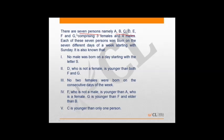There are seven people, namely A to G, comprising three females and four males. I'm going to denote female genders by elliptical or circular notation and male genders by rectangular or square notation, so I don't have to write M or F under each alphabet. This is the notation I'll use for gender.